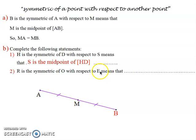R symmetric of O with respect to E. E is the last point, so E is the midpoint of OR. We have EO equal ER.